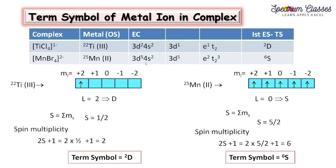For the Mn tetrahedral complex, manganese is in the second oxidation state (element 25). Two electrons are removed from the s orbital, leaving 3d5. It is a weak field ligand so all five electrons are unpaired. The total orbital angular momentum is L = 0, corresponding to the S term. With five unpaired electrons, 2S+1 = 6, giving the term symbol ⁶S.